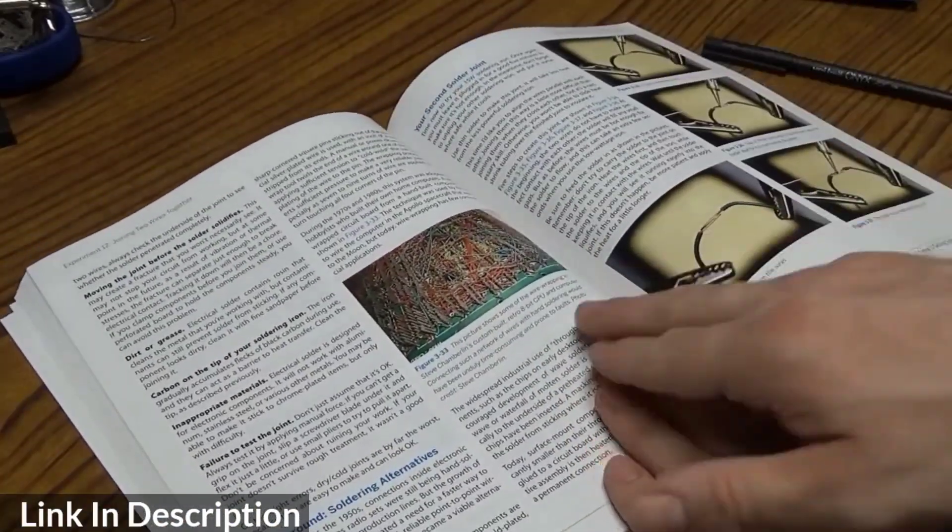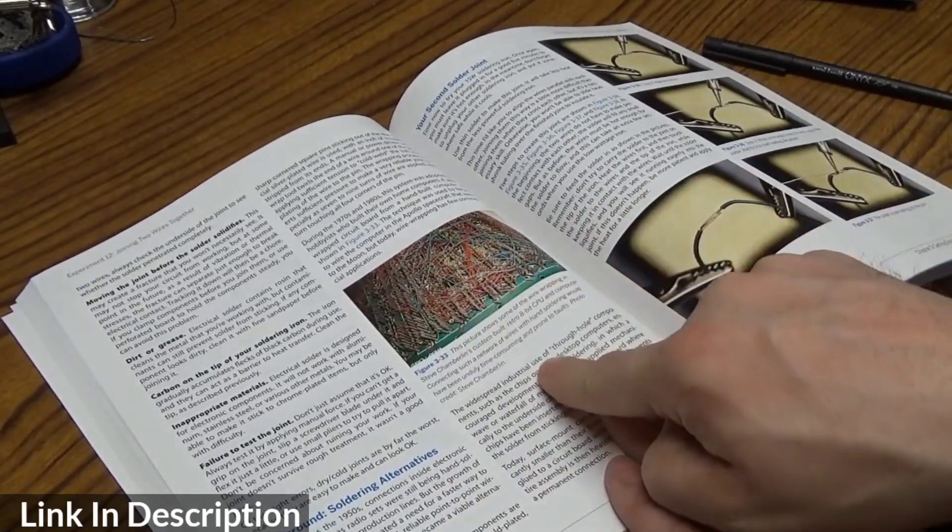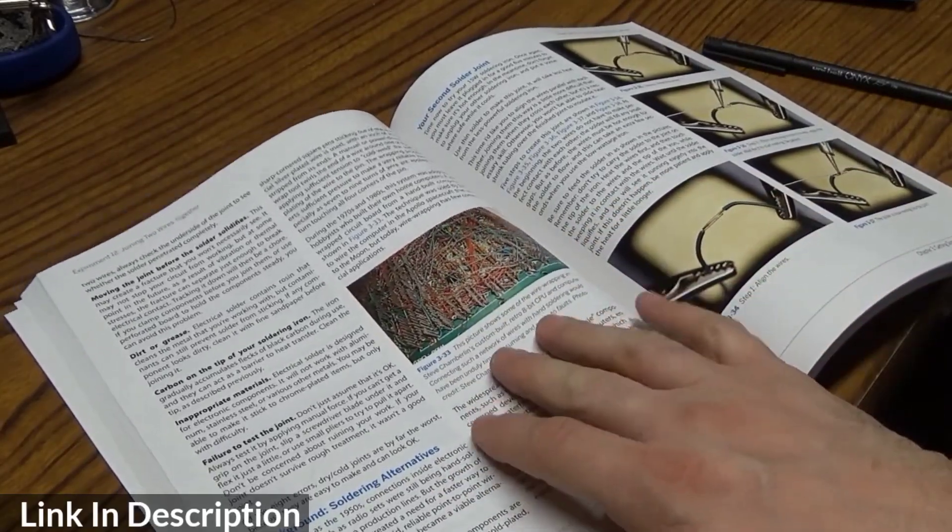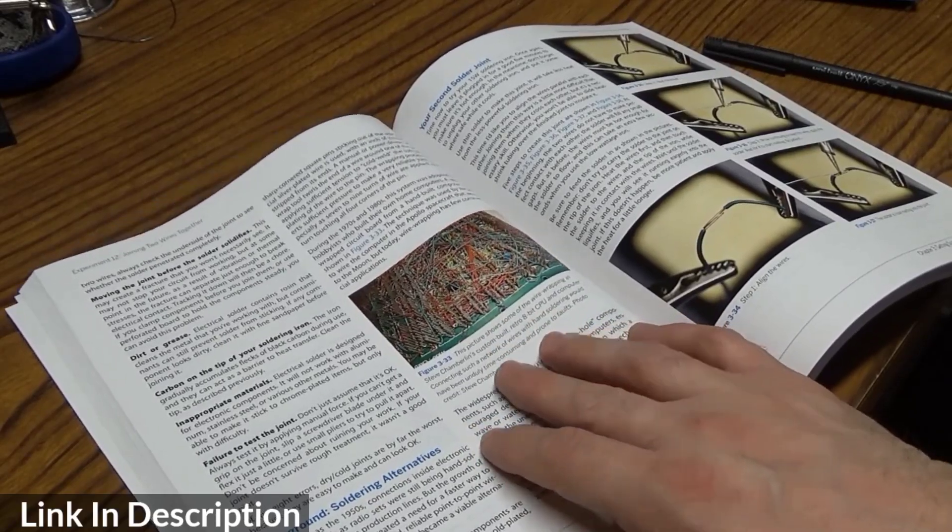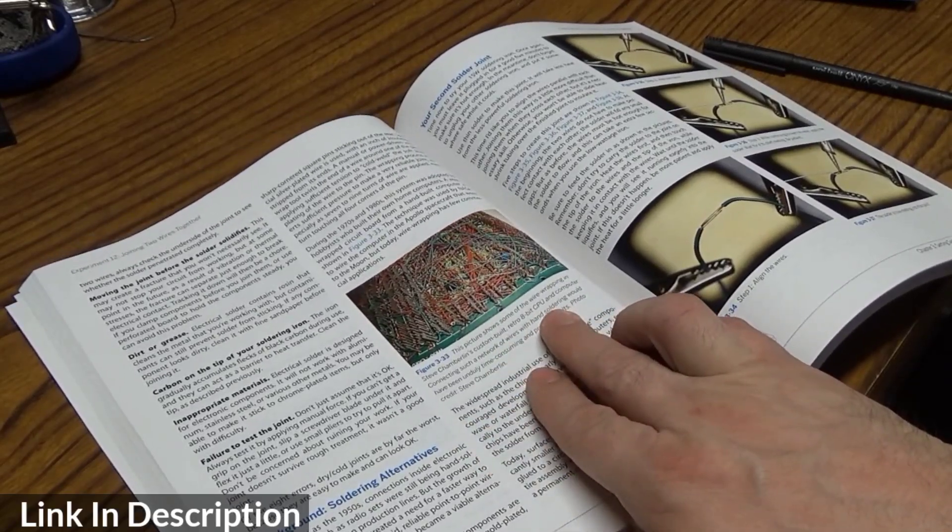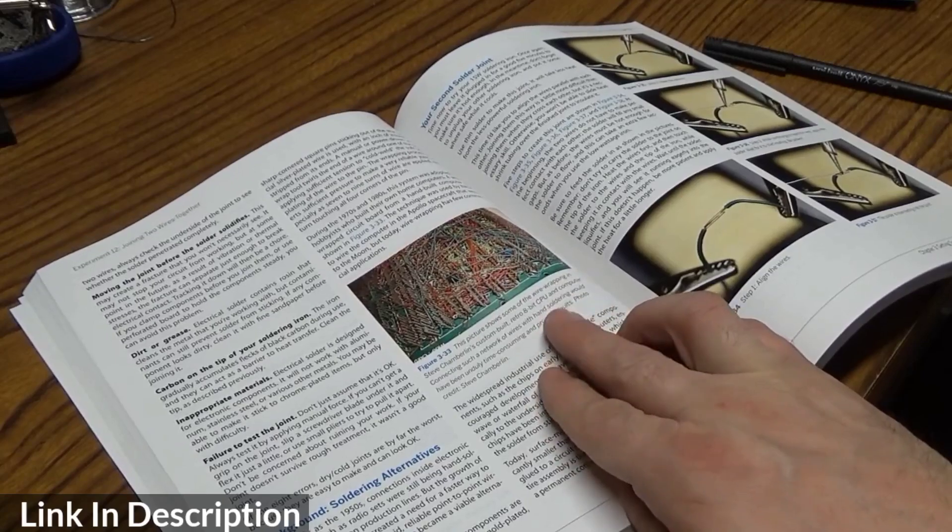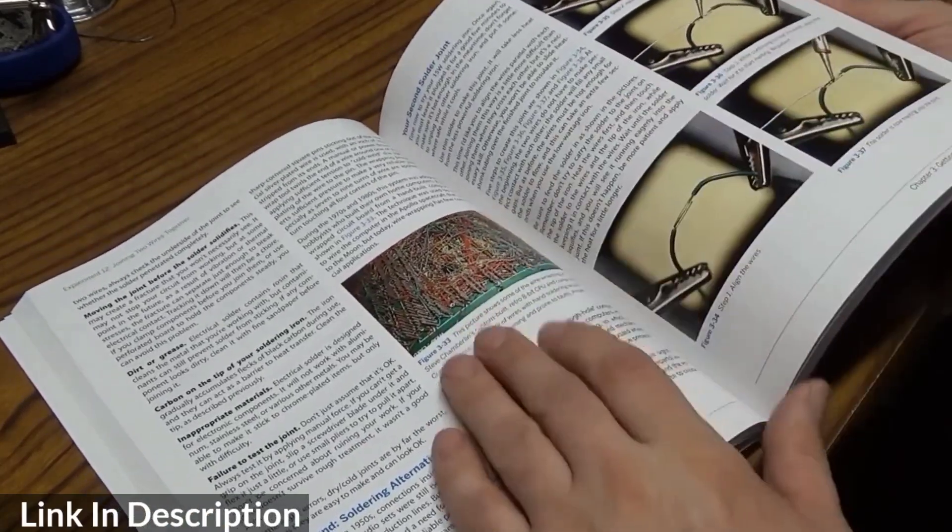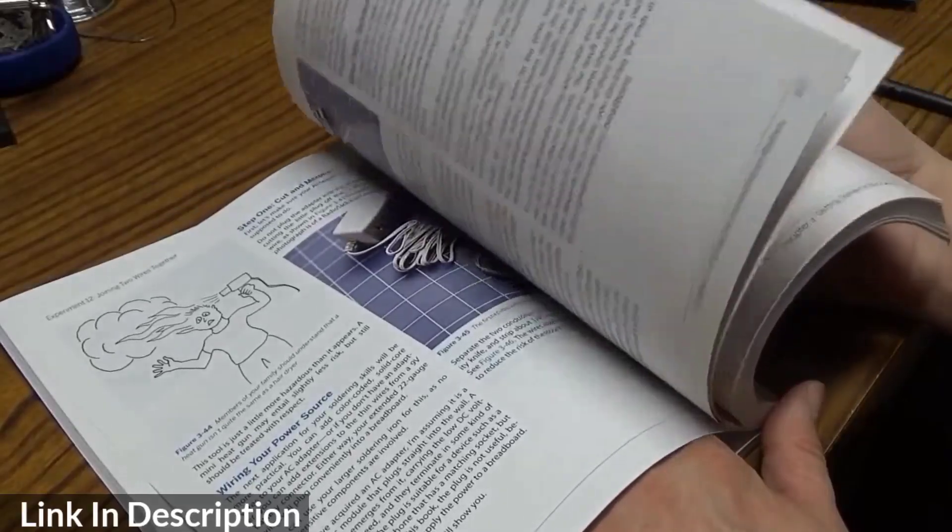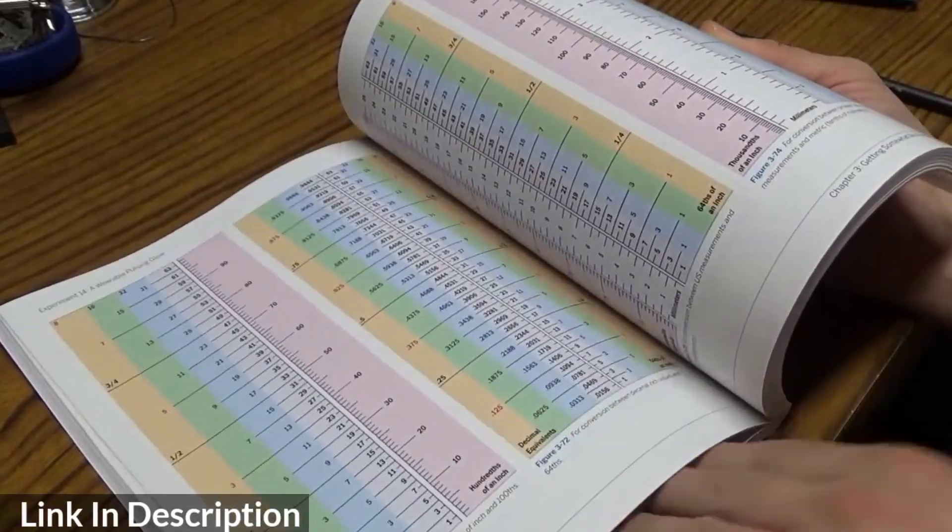Also interspersed they have like little tidbits of information, little bits of trivia. For instance, this one here is about wire wrapping in Steve Chamberlain's custom built retro 8-bit CPU computer, which really gives that extra bit of interest.